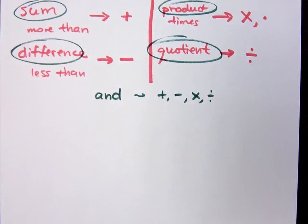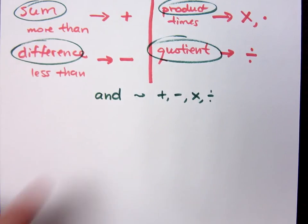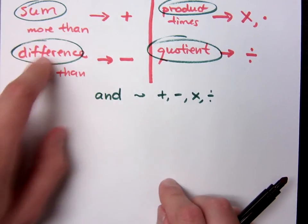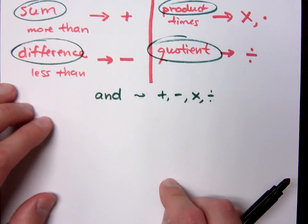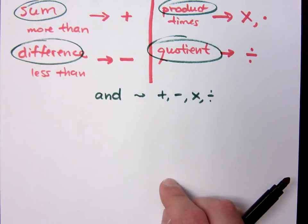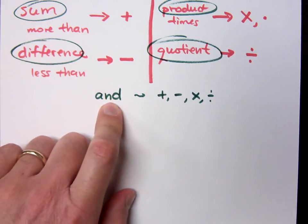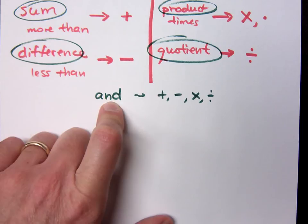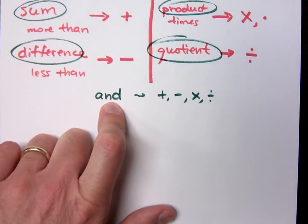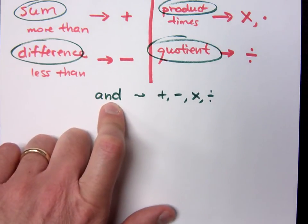Do not think that the word 'and' means addition. When you do that, you will fail — and unfortunately, I'll be there to grade it. 'And' is used with each of these main four operator words. So if I'm talking about the difference of something and something else, the 'and' is where your symbol goes. If I'm talking about the sum of this and that, 'and' is where the addition goes.